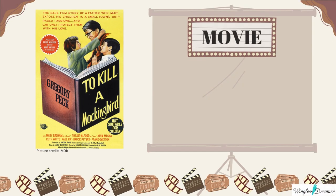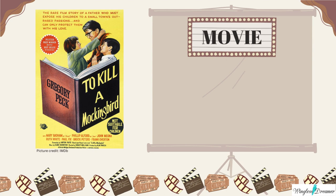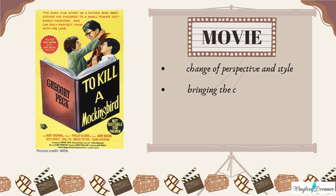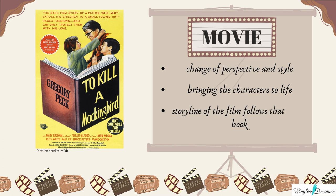Adapting the novel to the screen required not only a change of perspective, but also a change of style. However, the 1962 adaptation of the film does a great job of bringing the characters of Scout and Jem to life, while also bringing light to Atticus's character outside of the context of being Scout's father. The storyline of the film follows that of the book almost word-to-word, staying true to the elements presented by Harper Lee.